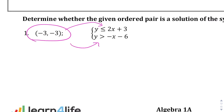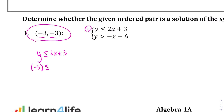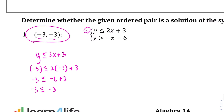We're going to plug these values into both inequalities. Rewriting the first one: y less than or equal to 2x plus 3. Plugging in negative 3 for x and negative 3 for y, we get 2 times negative 3 equals negative 6, plus 3 equals negative 3. So negative 3 is less than or equal to negative 3 — this is a true statement.